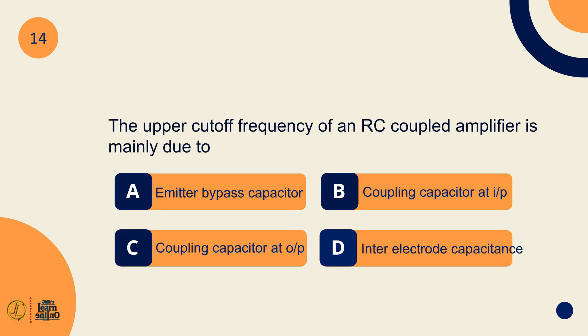The upper cutoff frequency of an RC-coupled amplifier is mainly due to inter-electrode capacitance.